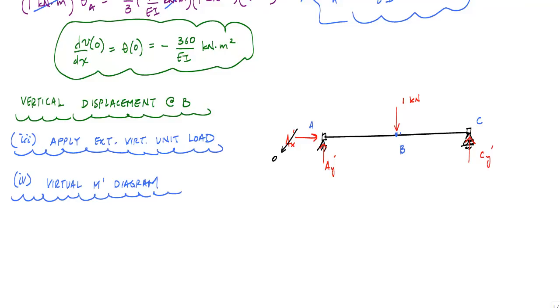If I look at this structure now, the loading and the boundary conditions are symmetric. So I know that this will be 0.5 kilonewtons, and CY prime will be 0.5 kilonewtons.